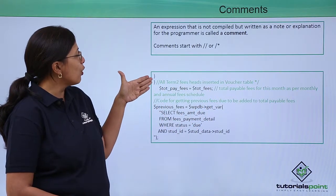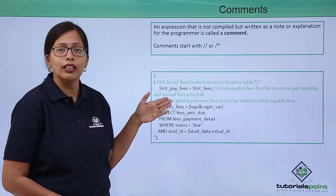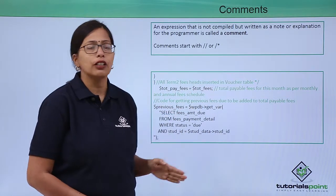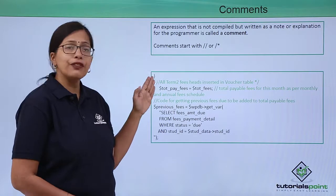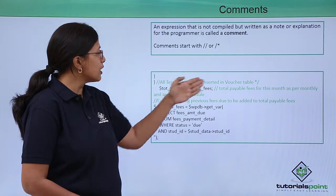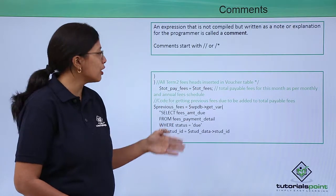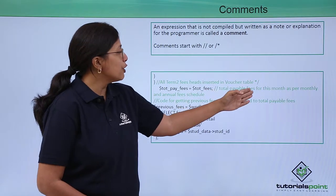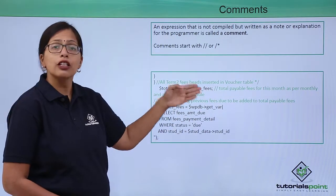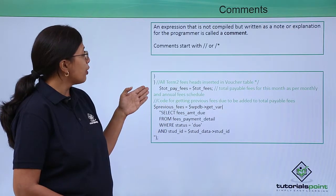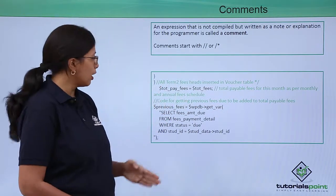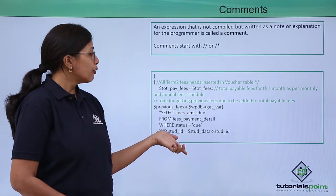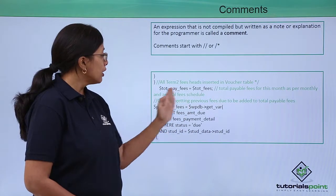As you can see, all the lines highlighted in green are the comments. For example, 'all term to fees head inserted in voucher table' is a comment at the end of a function block, telling the reader what has already been done. Another example, 'total payable fees for this month as per monthly and annual fee schedule,' tells the programmer what that statement is doing. Similarly, 'code for getting previous fees due to be added' indicates what the following set of statements performs.